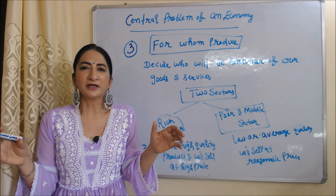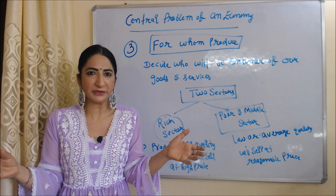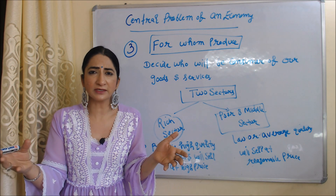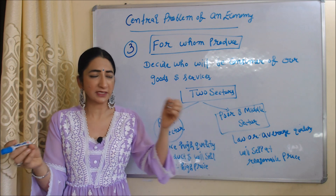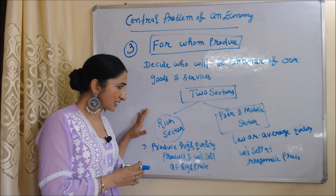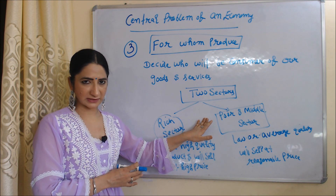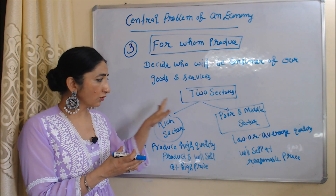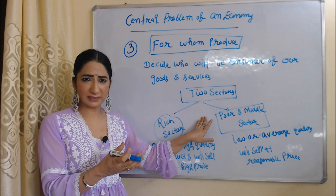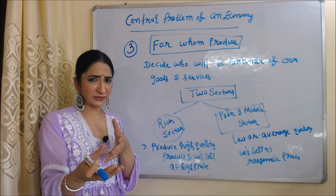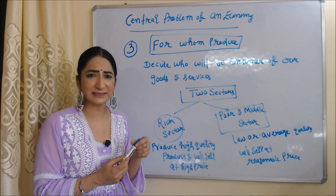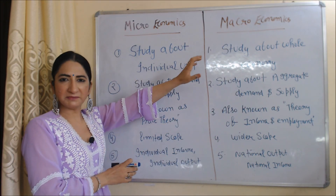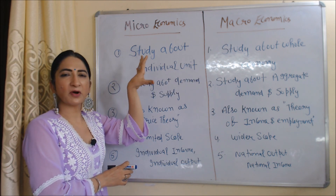The next problem is 'for whom to produce.' We have to decide for whom we will produce our goods and services, or who will be the consumers. There are mainly two sectors: the rich sector, and the poor and middle sector. For the rich sector, we will produce high quality products and sell at higher prices. For the poor and middle sector, we will produce low or average quality products and sell at reasonable prices.